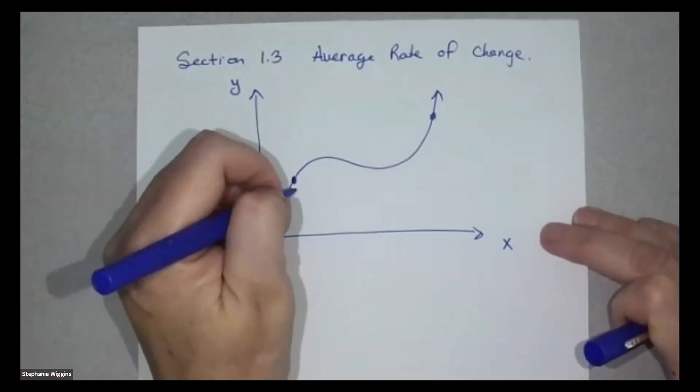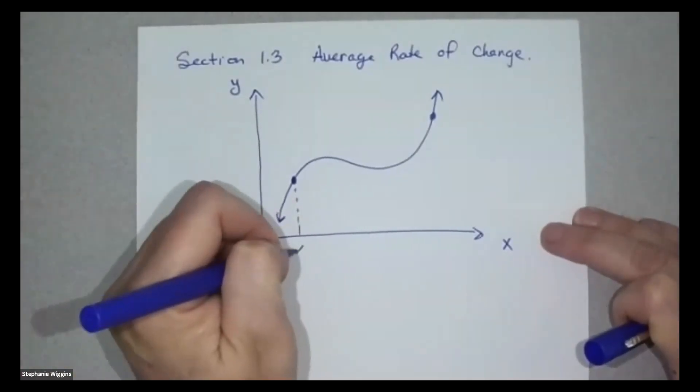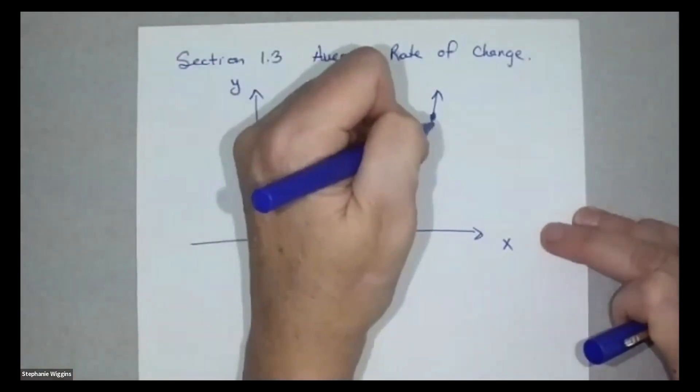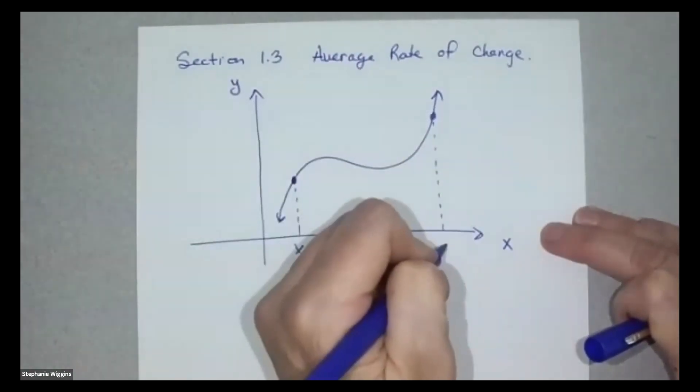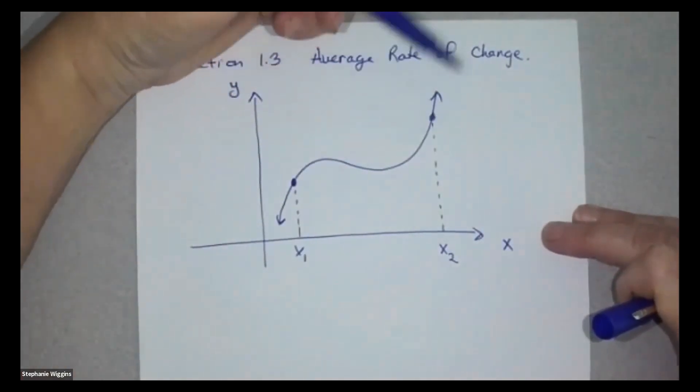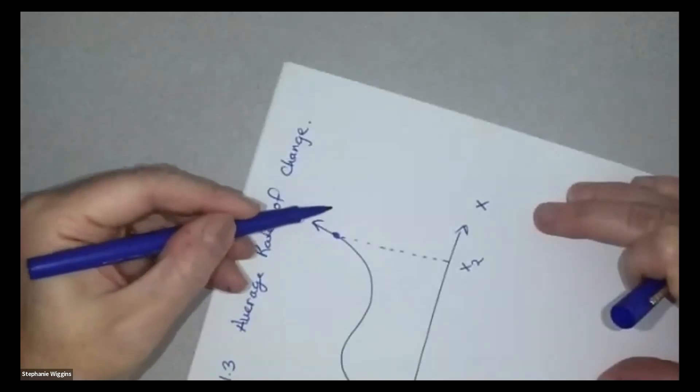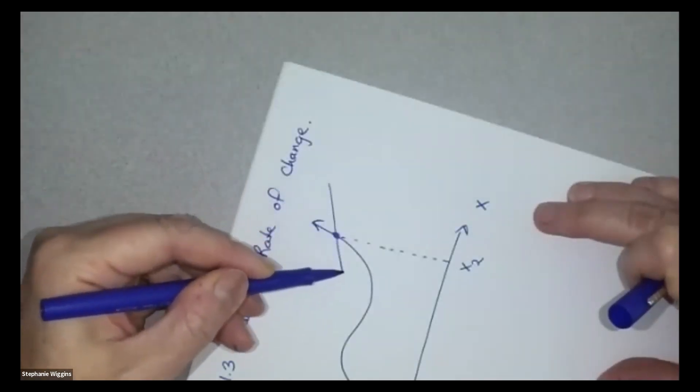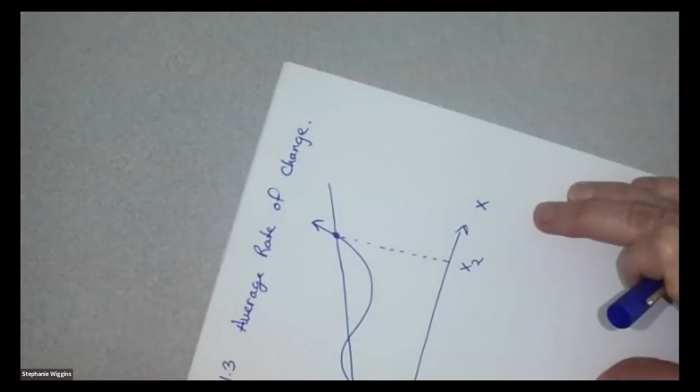So let's call this point here x1 and we'll call this point down here x2. So I'm going to try and draw a straight line. Let me do this first. It's easier if I tip my paper.